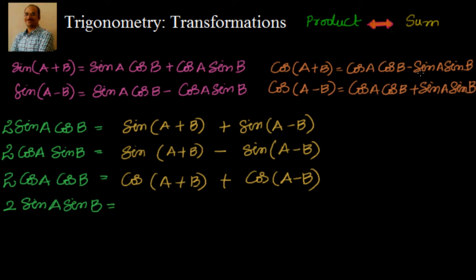Now, when will you get 2 sinA sinB? If I subtract equation 2 from equation 1 for the cosine formulas, cosA cosB cancels out and I get minus 2 sinA sinB. So to get 2 sinA sinB, I take cos(A-B) minus cos(A+B), which gives 2 sinA sinB.